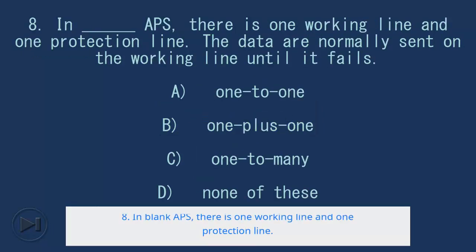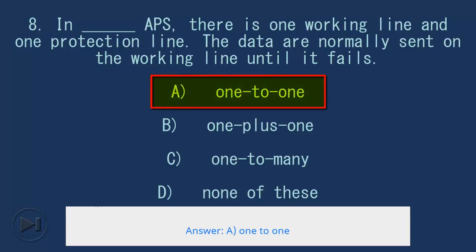8. In blank APS, there is one working line and one protection line. The data are normally sent on the working line until it fails. A. One-to-one, B. One-plus-one, C. One-to-many, D. None of these. Answer: A. One-to-one.